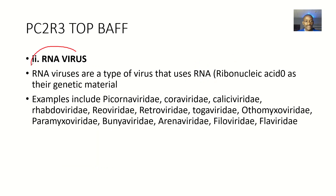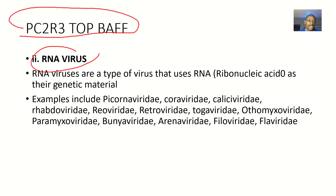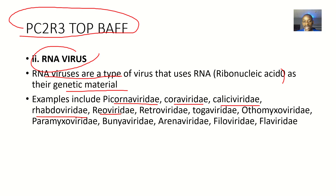Talking about RNA viruses, the mnemonic is PC²R³ TOP BATH. RNA viruses use ribonucleic acid as their genetic material. The examples are: Picornaviridae, Coronaviridae, Caliciviridae, Rhabdoviridae, Reoviridae, Retroviridae, Togaviridae, Orthomyxoviridae, Paramyxoviridae, Bunyaviridae, Arenaviridae, Filoviridae, and Flaviviridae.